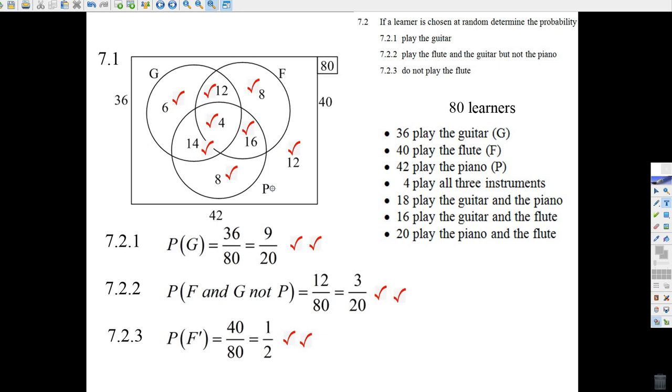Now I've got the whole Venn diagram filled out, and it's a lot of marks: 1, 2, 3, 4, 5, 6, 7, 8 marks. There you go.